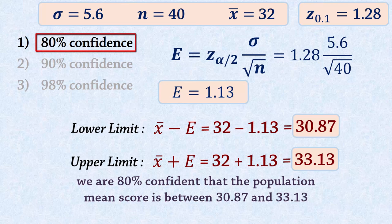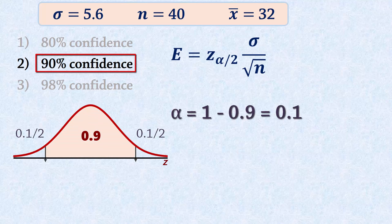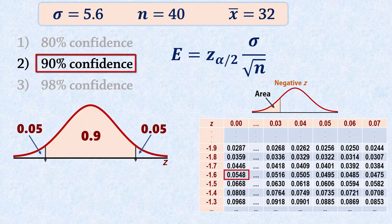With 90% confidence, alpha is 0.1, so we have 0.05 in each tail. Looking that up in the Z tables, we find that 0.05 lies exactly midway between 0.0505 and 0.0495.